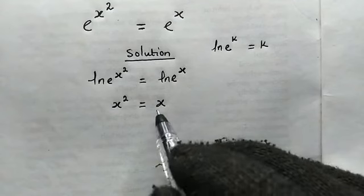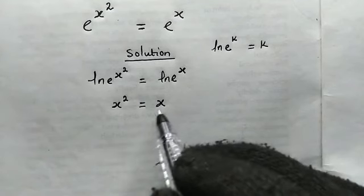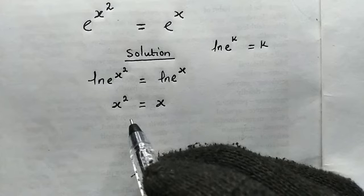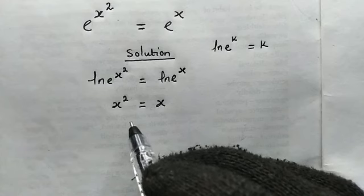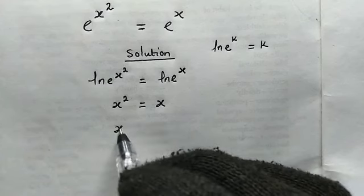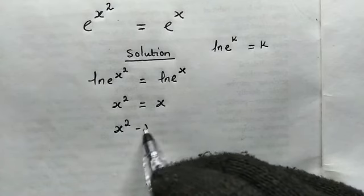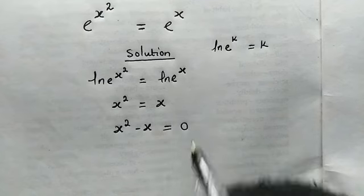From here, do not make the mistake of dividing both sides by x. If you do that, you will lose a solution. The best thing to do is to subtract x from both sides and set it equal to 0.